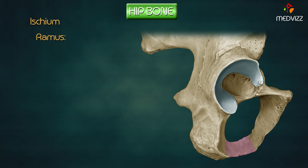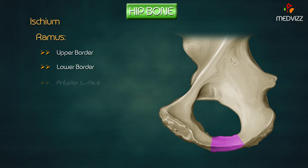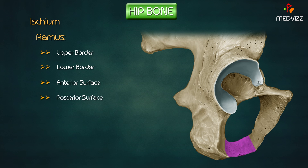The ramus of the ischium extends upwards, forwards, and medially from the body of the ischium to join the inferior ramus of the pubis. It has two borders and two surfaces. The anterior surface is continuous with the anterior surface of the inferior ramus of the pubic bone. The posterior surface is divided into three areas by two blunt ridges: upper area, middle area, and lower area.